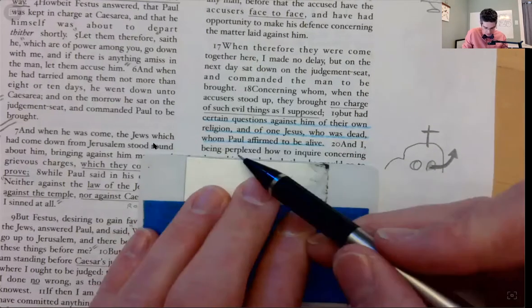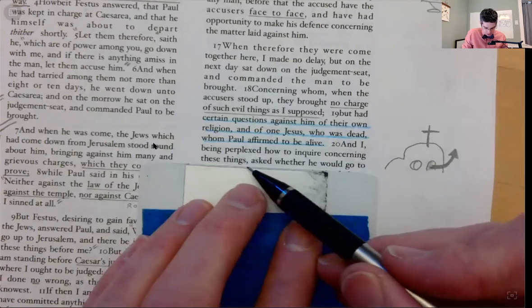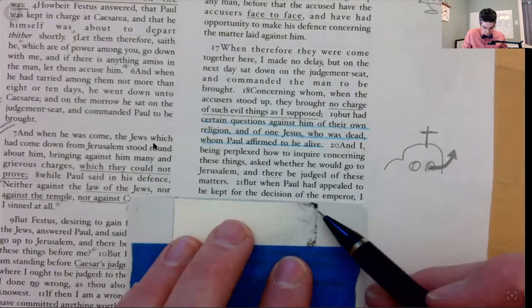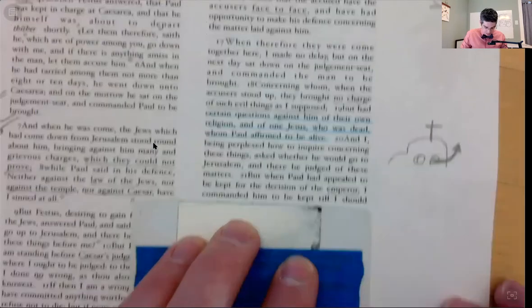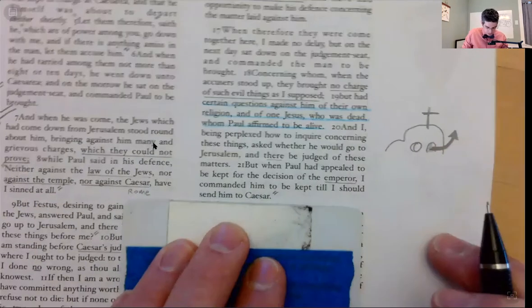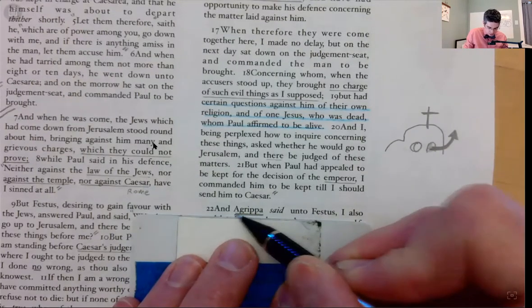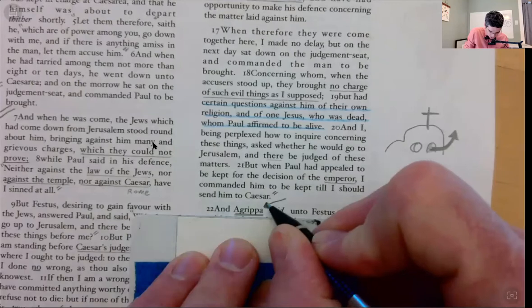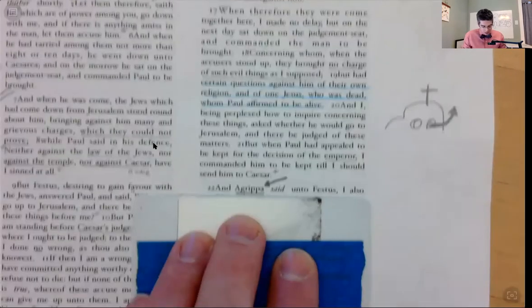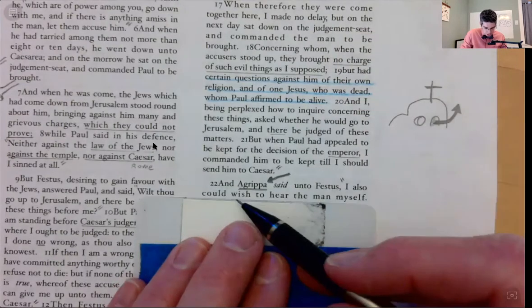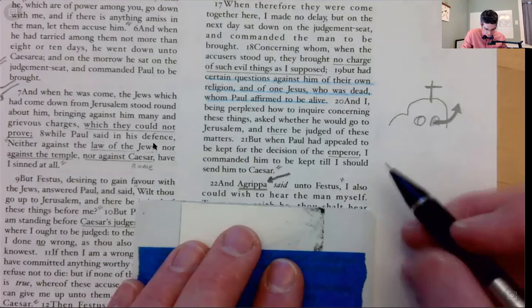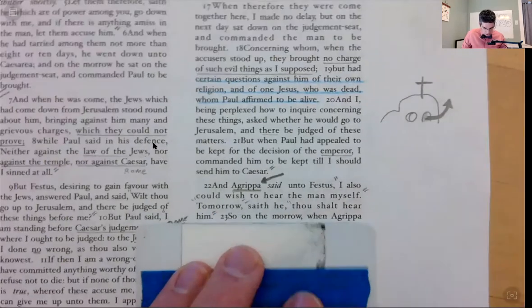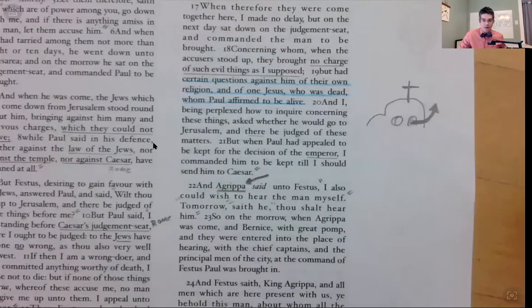And I, Portius Festus, being perplexed how to inquire concerning these things, asked whether he would go to Jerusalem and there be judged of the matters. But when Paul had appealed to be kept for the decision of the emperor, or the Caesar, I commanded him to be kept until I could send him to Caesar. And Agrippa said to Festus, I also could wish to hear the man myself. Tomorrow, said he, you shall hear him.